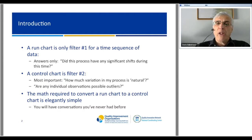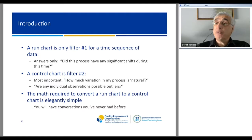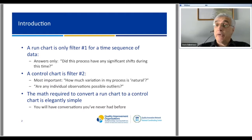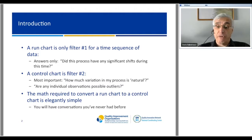The control chart answers the question: how much variation in my process is natural? And are any individual observations possible outliers? Those are two very important questions. The math required to convert a run chart to a control chart is elegantly simple, and as a result, you will have a chart that motivates conversations you've never had before—hopefully more productive ones.